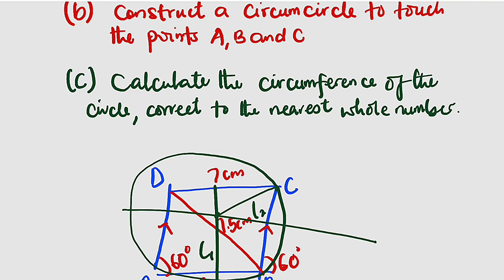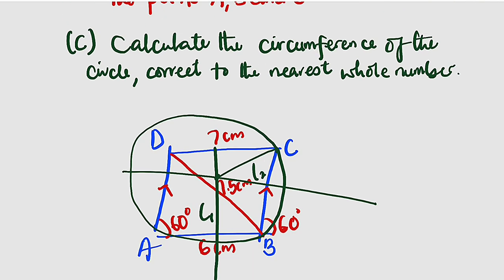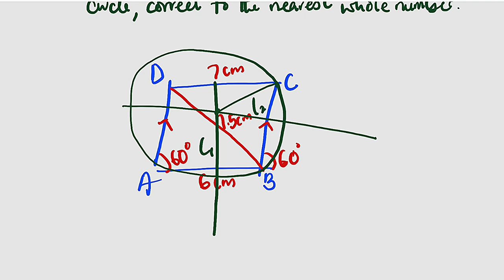Then move to the last part: calculate the circumference of the circle. You have to measure the radius of the circle — from the center O to C, or O to B, or O to A — all equal to the radius. Measure it, then calculate the circumference. Let's get started.